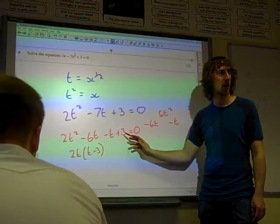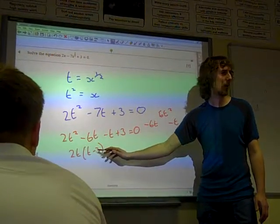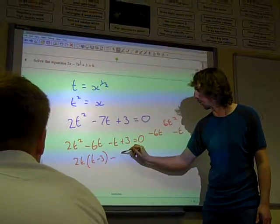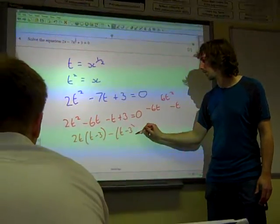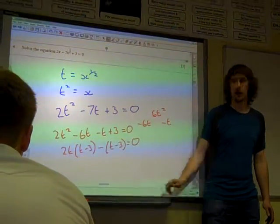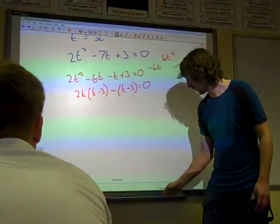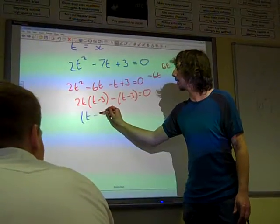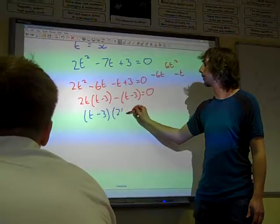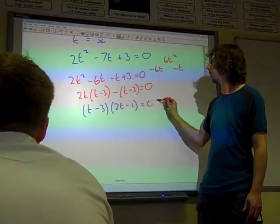It's a little bit deceptive what's going on here. The second two terms, in order to get the bracket to match up, we actually have a common factor of minus 1 that we need to bring out of that. But you see we've got the two brackets matching up, t minus 3 times 2t minus 1 is 0.